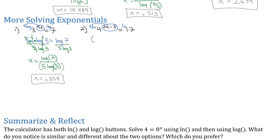To show that entire thing as a factor, I'm going to put the 2x minus 3 in parentheses before the natural log of 4, equals the natural log of 17. The natural log of 4 is just a number — it's a weird number, but it is a number. So we can solve by distributing that natural log of 4 through the parentheses to get that x out, giving me 2x natural log of 4 minus 3 natural log of 4 equals the natural log of 17.